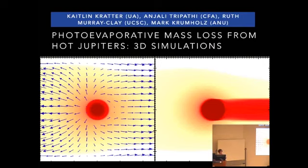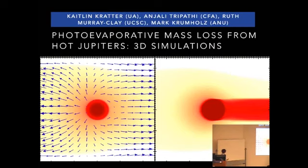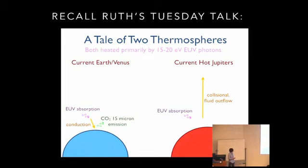So I was going to be a total delinquent and tell you about a project that didn't have a whole lot to do with atmospheres, but then I thought the better of it and I'd save that for later. So my title in the program is incorrect in case you looked at that. What I'm really going to talk about today is photo evaporative mass loss from hot Jupiters. And specifically, I'm going to focus on a project led by a graduate student at the CFA, Anjali Tripathi, in collaboration with myself, Ruth Murray Clay, and Mark Krumholz, looking at 3D simulations of mass loss. And so I'll just start out with a quick review of some of the things that Ruth talked about on Tuesday.